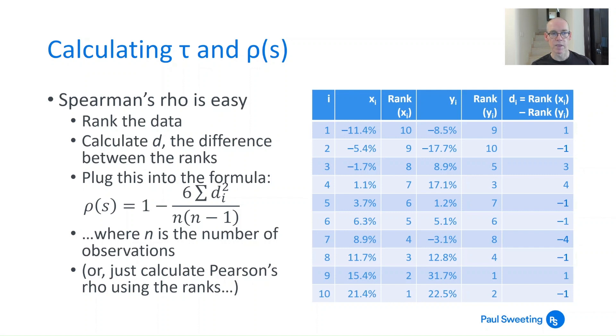Take all those differences, DI, you square them all, add those squares together, multiply by 6, divide by N brackets N minus 1, so N is the total number of observations, which is 10 here, then do 1 minus that. That gives you Spearman's rank correlation coefficient. It's a pretty easy formula to plug things into.